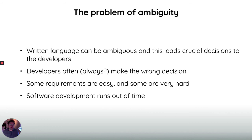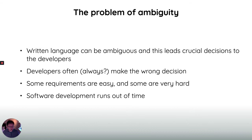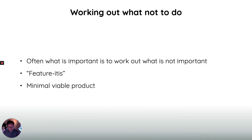The trouble is these documents are written in English or Swedish — natural language can be quite ambiguous. This means crucial decisions about what a system will do often get left to developers, who, being busy people, usually decide on the quickest fix to an ambiguity and make their own decisions. Some requirements are very easy and others can be very hard or even impossible to meet. Software development often runs out of time to meet a deadline, and requirements often have to be cut.